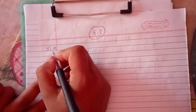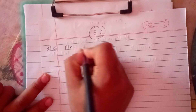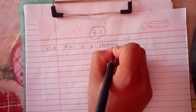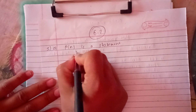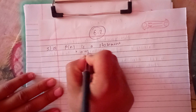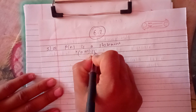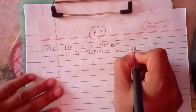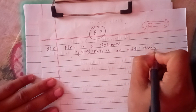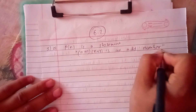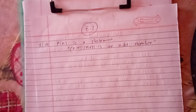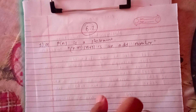If P(n) is a statement, what is the statement? The statement is: n plus 1 times n plus 2 is an odd number.